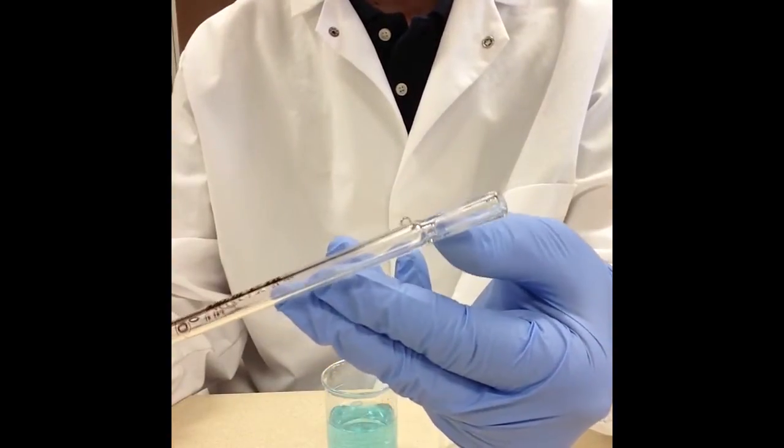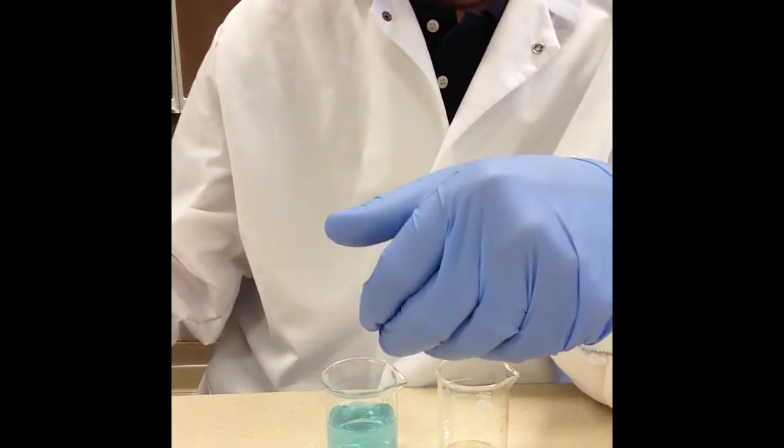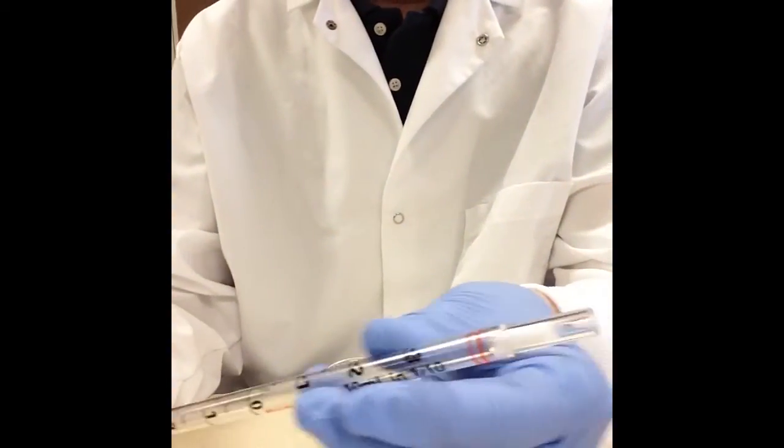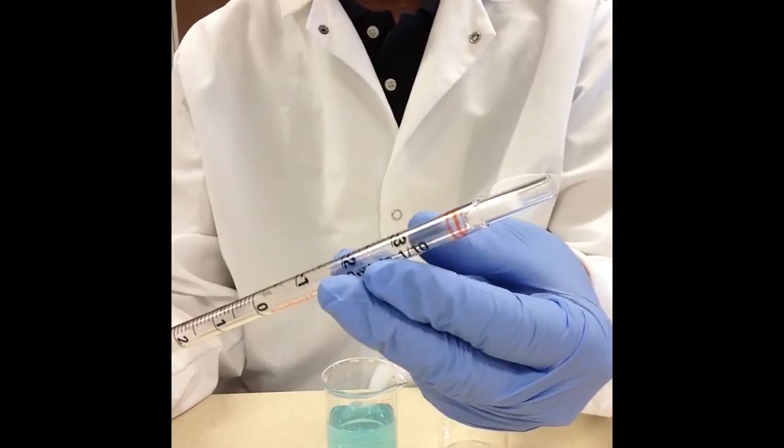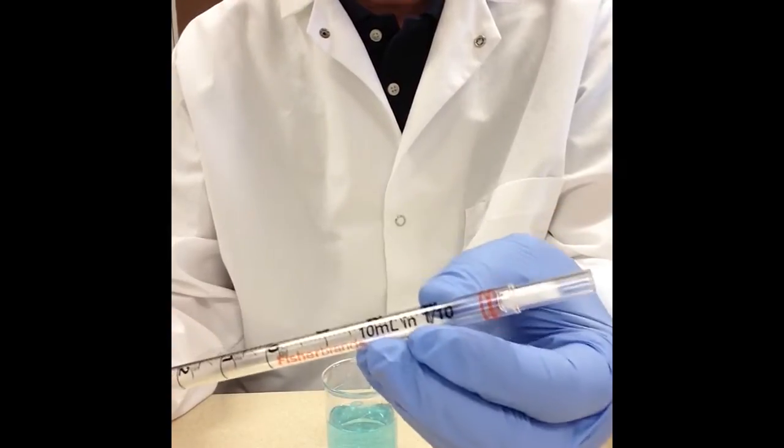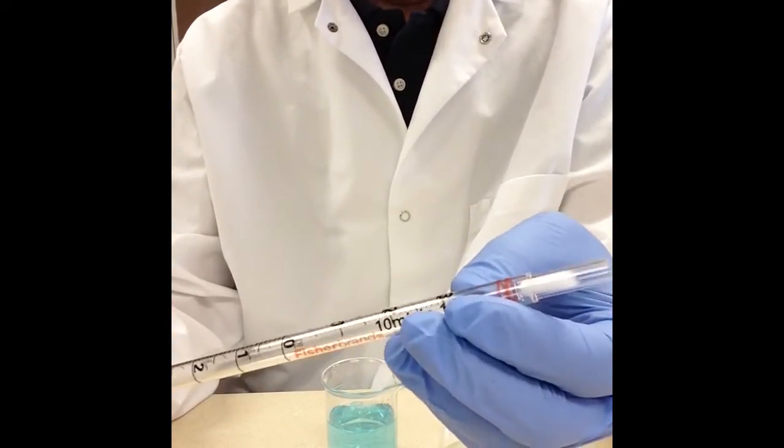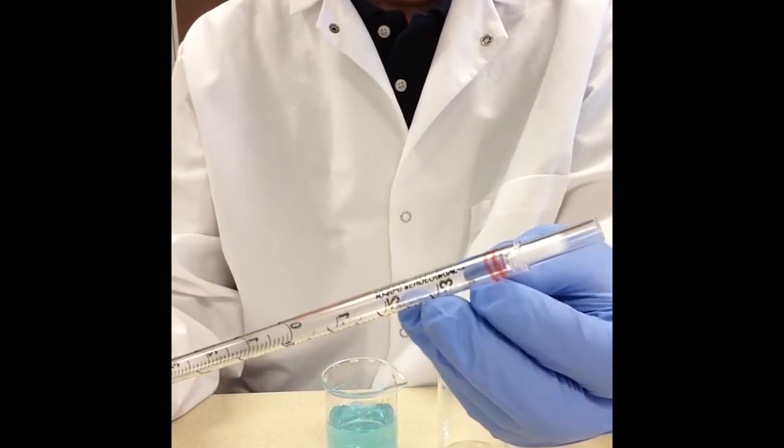But another thing that we're looking for is whether there is a ring around the top and this one it's a little bit faint but there's this etched ring that goes all the way around the top of the pipette. And on this disposable one there are two colored red rings that go all the way around.